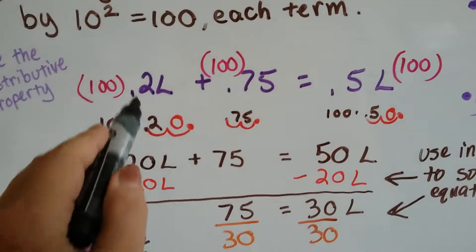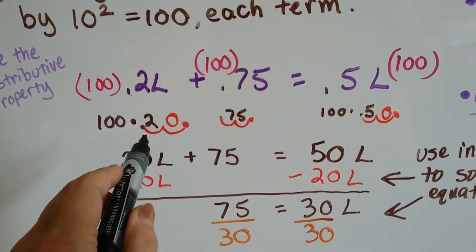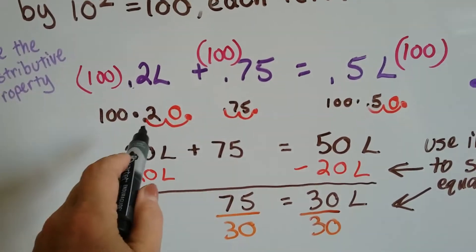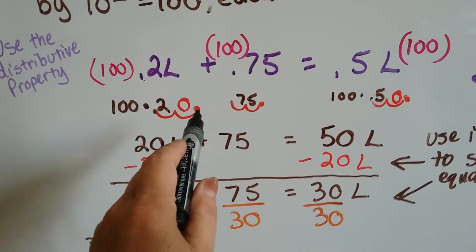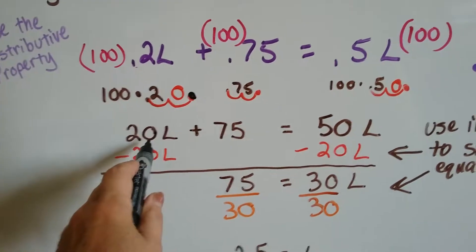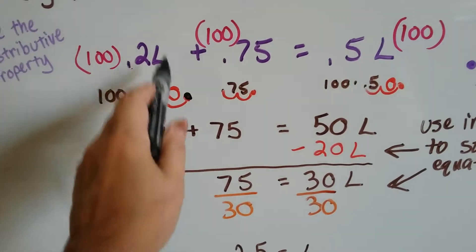.2 times 100, we take the decimal point, and we make it hop two times for the two zeros. We go 1, 2, and we put it here. So now we've got a 20. We've got 20L.